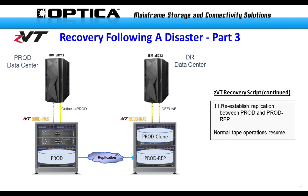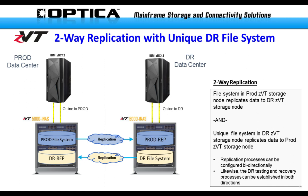Once you've re-established your real production site, you can restart replication back to the DR site. For customers with two active sites that are each other's DR, you can configure replication policies in both directions simultaneously — each site maintains an image of the other. The same cloning and mounting steps apply: create a clone of the DR replication on the production site, export and mount it to the VTNs, and begin working on that system.